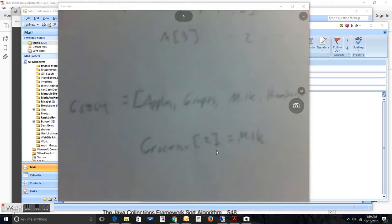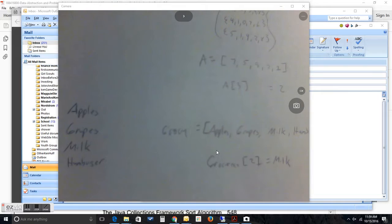And I think you can see that. Apples would be zero, one, two. So, groceries of two would be milk. So, that's the concept of a list. Now, a list can often be implemented using an array. That's an important concept.